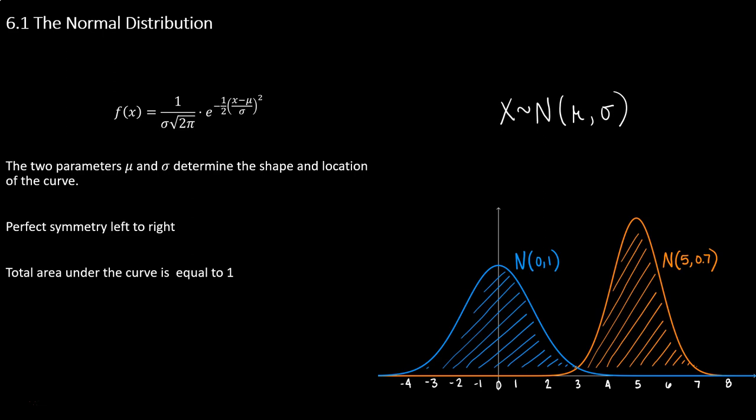No matter what mu and sigma you have, there are two things that are always true about a normal distribution. The first is that we have perfect symmetry left and right — perfect symmetry through the center of our curve.